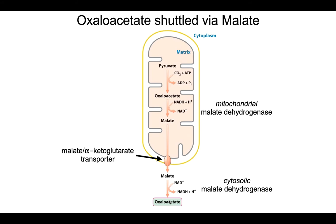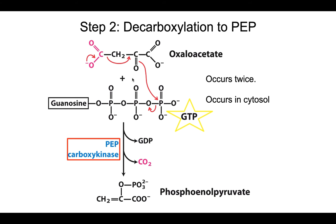Malate gets into the cytoplasm where a cytosolic malate dehydrogenase enzyme oxidizes malate back into oxaloacetate. Now we have oxaloacetate within the cytoplasm and we are ready to convert it into phosphoenolpyruvate. We have our oxaloacetate and we need to phosphorylate it and get rid of that carboxyl group. This is done using an enzyme called phosphoenolpyruvate carboxykinase — carboxy because we are removing the carboxyl group, kinase because we are phosphorylating. Here is our GTP, which donates the phosphate group into phosphoenolpyruvate, and we lose the carboxyl group. Each conversion costs one GTP.